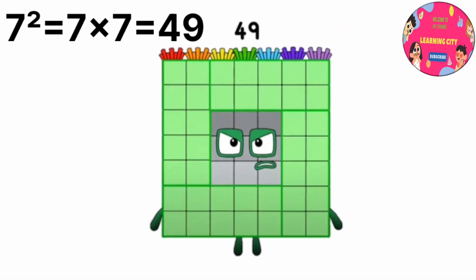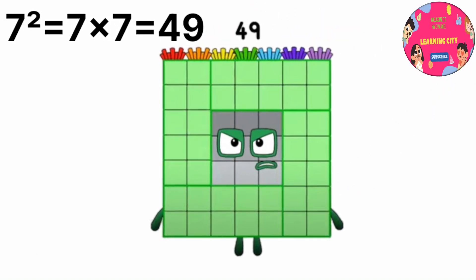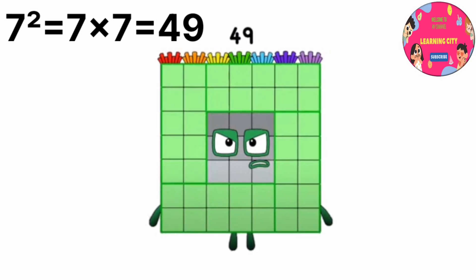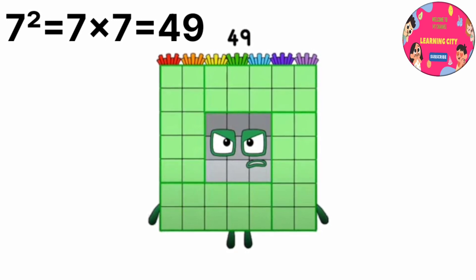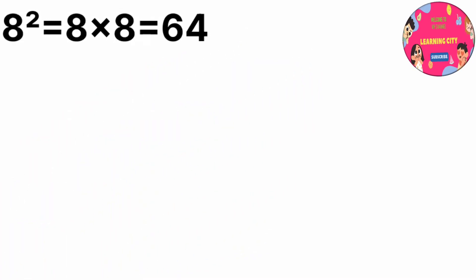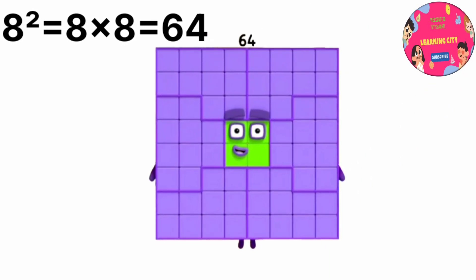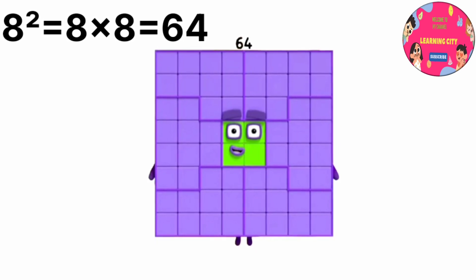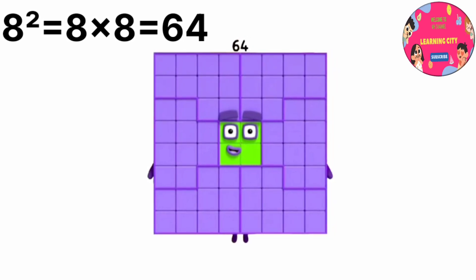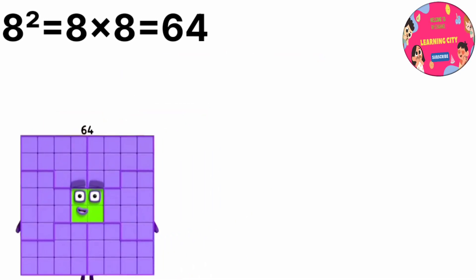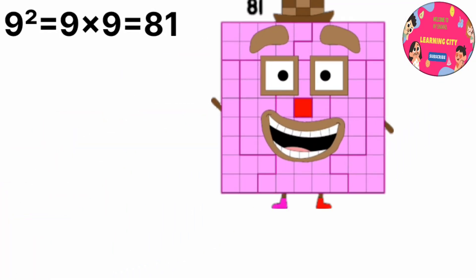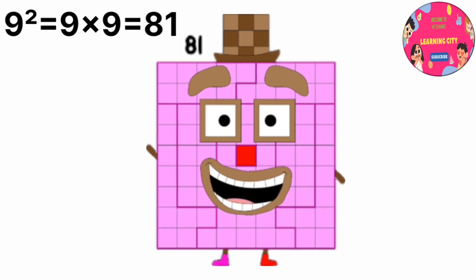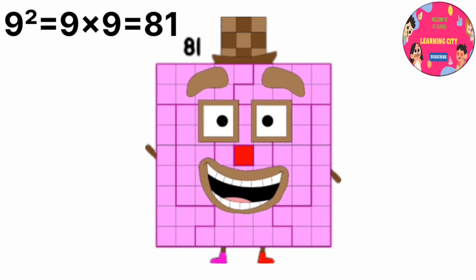7 power 2 equals 49, or 7 multiply by 7 equals 49. 8 power 2 equals 64, or 8 multiply by 8 equals 64. 9 power 2 equals 81, or 9 multiply by 9 equals 81.